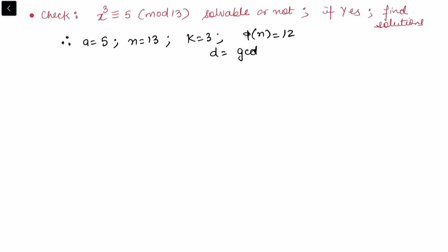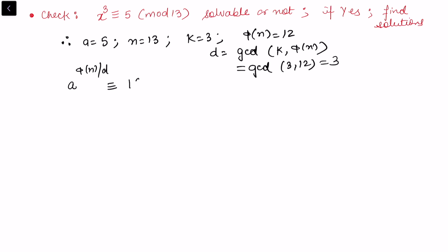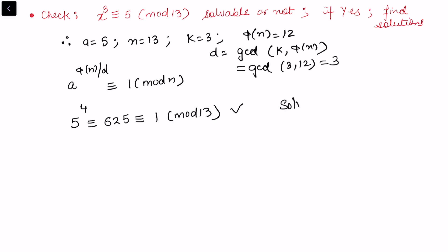We have φ(13) = 12 and d = gcd(k, φ(n)) = gcd(3, 12) = 3. We require a^(φ(n)/d) ≡ 1 (mod n), that is 5^(12/3) = 5^4 ≡ 1 (mod 13). Computing: 5^4 = 625, and 625 ≡ 1 (mod 13). So this condition is satisfied, and x³ ≡ 5 (mod 13) is solvable.